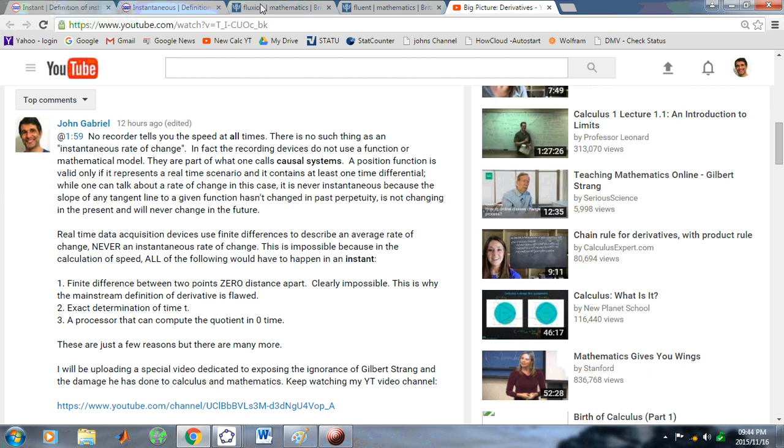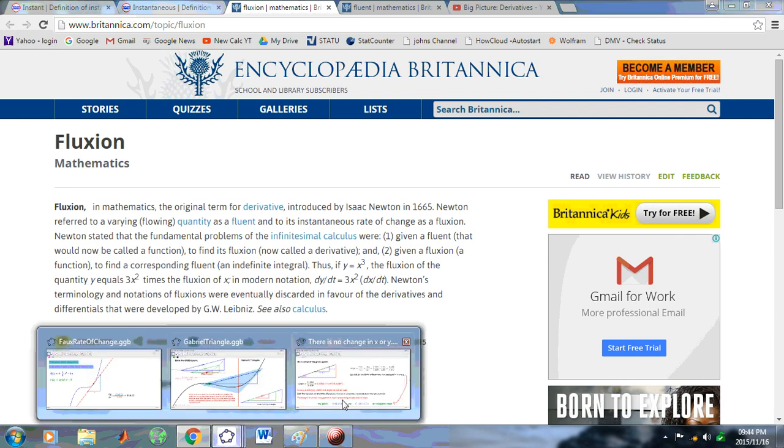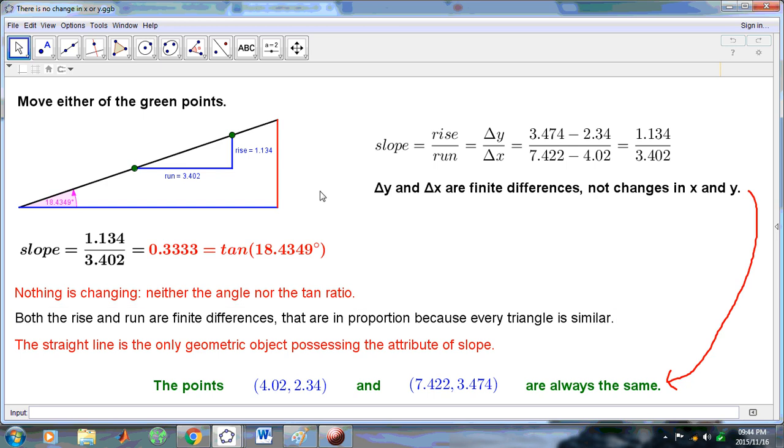Where did that expression come from? It goes back all the way to Newton. If you look at the Encyclopedia Britannica entry on fluxion, what Newton meant by fluxion is derivative. And it was interpreted as an instantaneous rate of change. But really, there is no change occurring. There is no change in terms of the tangent line slope. There is no change in terms of the finite differences. Because all the finite differences are the same as I've shown you in another YouTube video.